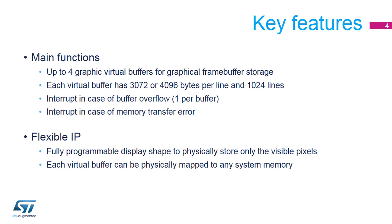The CHROM GRC is seen by the masters of the STM32 system as four virtual buffers to store the graphical frame buffer. Each virtual buffer consists of 1,024 lines with 3,072 or 4,096 bytes per line. The size of each line is configurable by software.